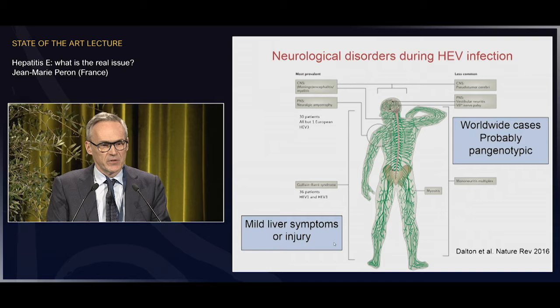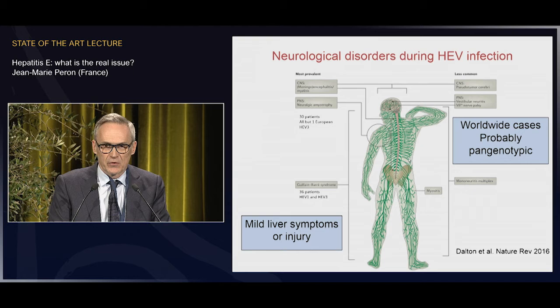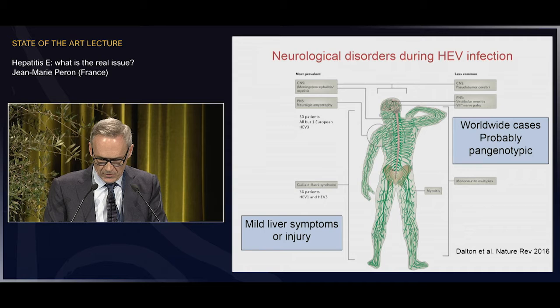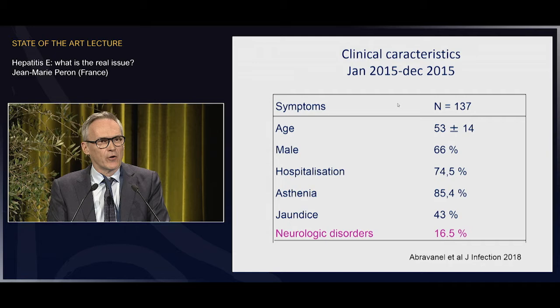Usually there are mild liver symptoms and a little liver injury. The neurological disorders include mononeuritis, which is very frequent; Guillain-Barré syndrome; neuralgic amyotrophy, known as Parsonage-Turner disease; and also meningitis. HEV can infect different parts of neurological cells.